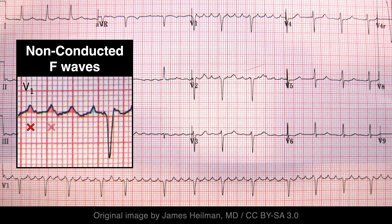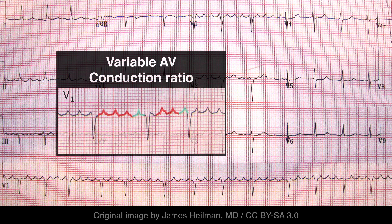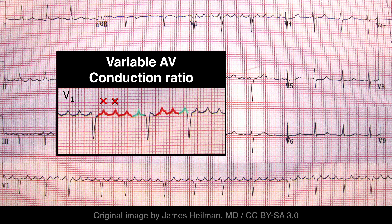Although the flutter rate can be very rapid, typically only a portion of impulses are conducted to the ventricles. Physiologic conduction delay at the AV node usually limits the AV conduction ratio to between 2:1 and 4:1. If the AV conduction ratio is constant, the rhythm will be regular; otherwise, the RR intervals will be unequal. In this case, the conduction is variable, alternating between 3:1 and 4:1, meaning every third or fourth flutter wave conducts to the ventricles.